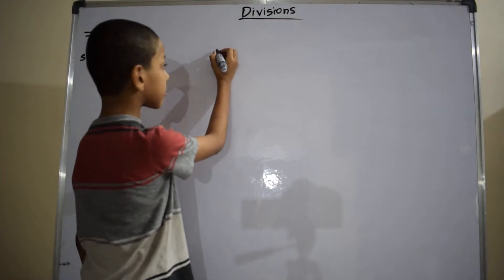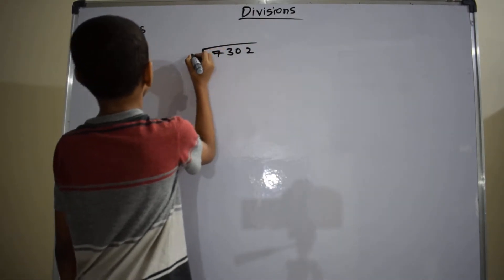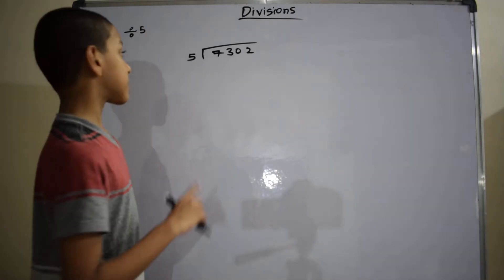Write the divisor and dividend as shown. So first you write 7.